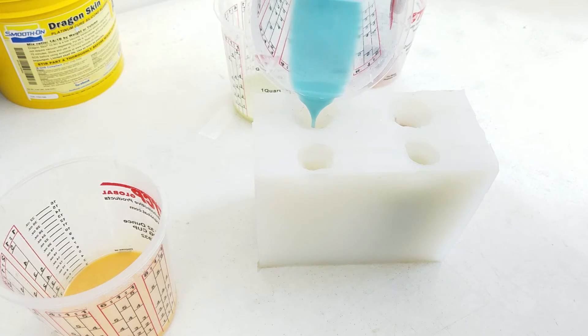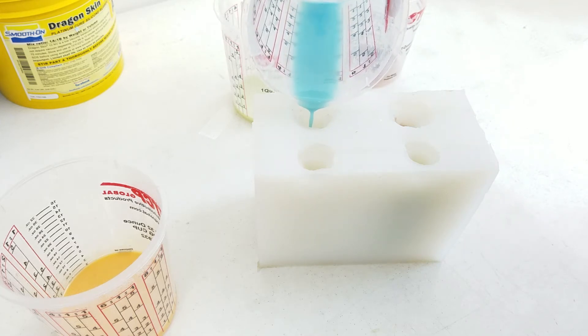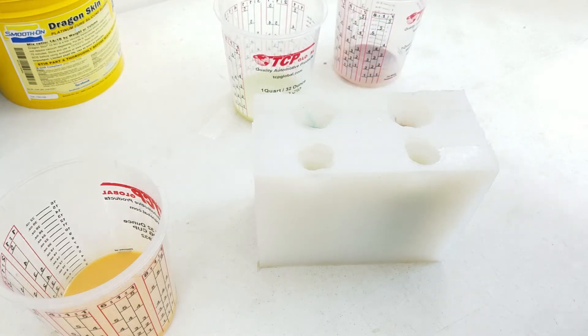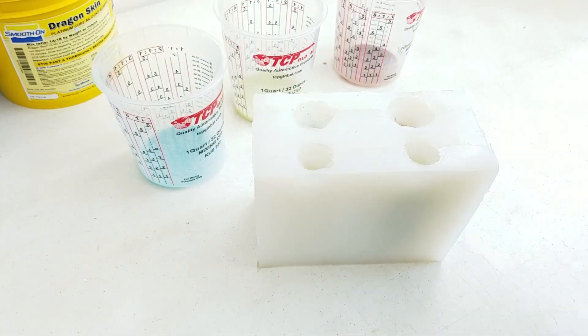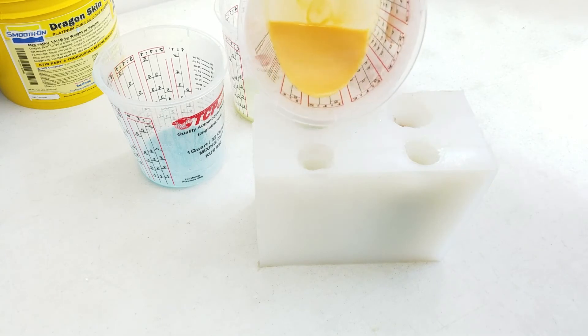This mold was made using the Dragon Skin silicone that you see in the back there. It's a Smooth-On product and we could not ask for a better silicone to use for our prototyping.